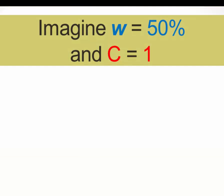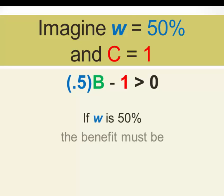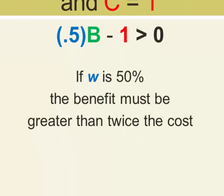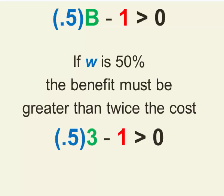Imagine, then, that W is 50% and that the cost is one unit of fitness or one offspring. What does the benefit have to be for it to be possible for cooperation to evolve? What has to be the case is that 0.5 times the benefit has to be greater than 0 when 1 is subtracted from it. A simple way to think of this is that if W is 50%, the benefit has to be greater than twice the cost in order for this inequality to hold.